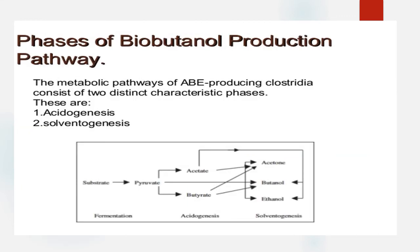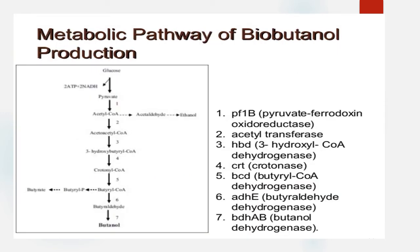Regarding metabolic pathways, acetone, butanol, and ethanol production undergoes distinct phases classified as acetogenesis and solventogenesis. In the glycolysis pathway, glucose is converted into pyruvate, which can directly convert to butanol or proceed through two intermediate pathways producing acetate and butyrate. Acetate is converted into butanol and ethanol, while butyrate is converted into acetone and butanol during solventogenesis.